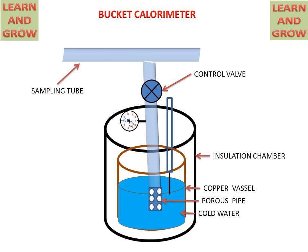Now we see the process of bucket calorimeter. Steam will come from the sampling tube and it will go to the copper vessel by this pipe. And from the porous pipe, it will condense into the copper vessel cold water and increase the temperature of the cold water. Then the thermometer will measure all the temperature changes in the water. This is the process of bucket calorimeter.